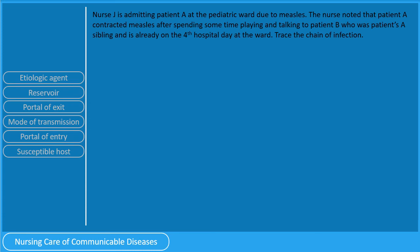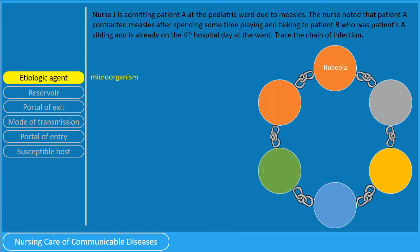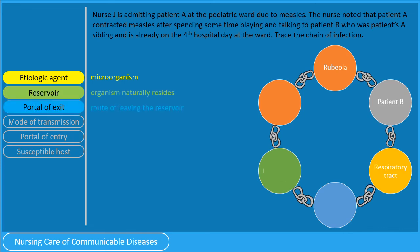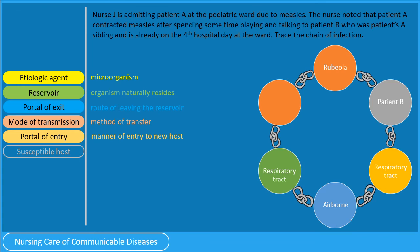Let us apply what we have learned in this example. Nurse J is admitting patient A at the pediatric ward due to measles. The nurse noted that patient A contracted measles after spending time playing and talking to patient B, who was patient A's sibling already on the fourth hospital day. Trace the chain of infection. The etiologic agent is rubeola. Patient B was the reservoir. The portal of exit is through the respiratory tract. Measles is transmitted via airborne transmission. The portal of entry is also the respiratory tract. And patient A was the susceptible host.